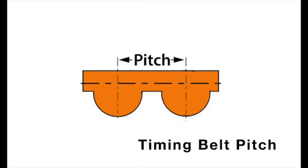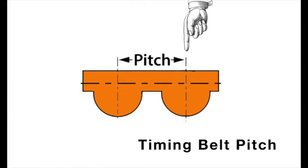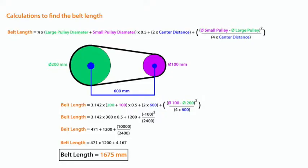Pitch is the measurement from the center of one tooth to the center of the adjacent tooth. Pitch length is the total distance, or circumference, around the belt.